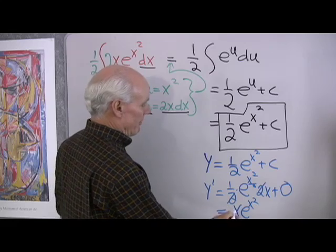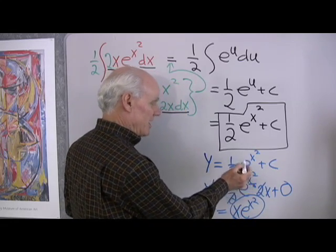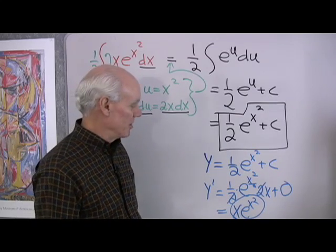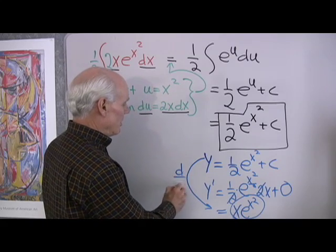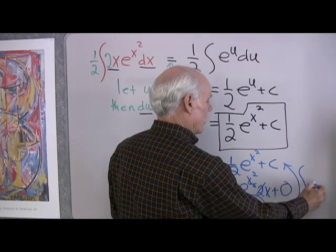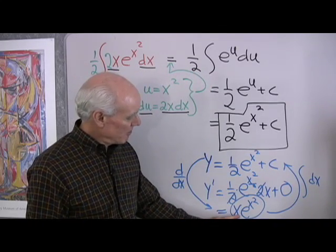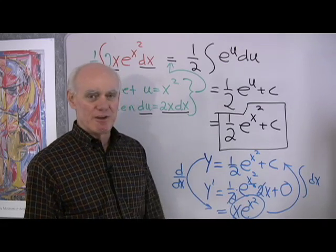I end up with just x e to the x squared. So sure enough, the anti-derivative of this is this, because if I take this function and differentiate it, I end up with the thing I was looking at in the first place. So in this direction I'm differentiating with respect to x. When I go in the other direction, I'm integrating with respect to x. This expression is the derivative of this, and this expression is the anti-derivative of this.